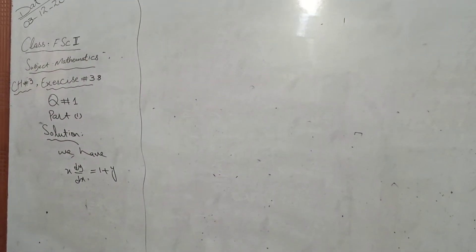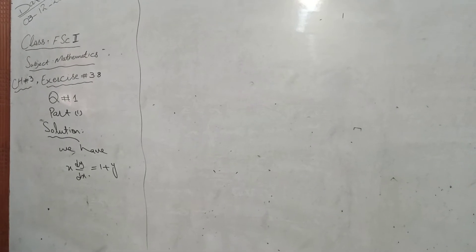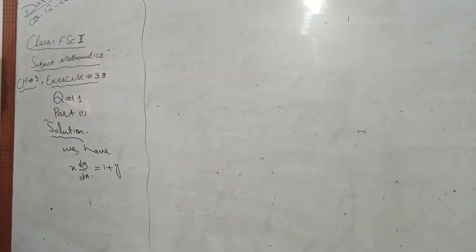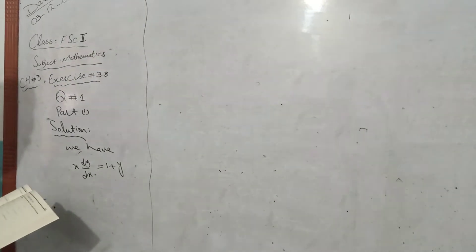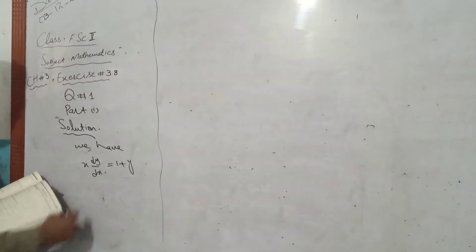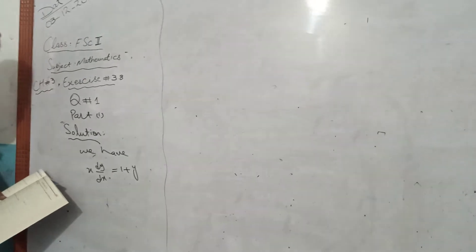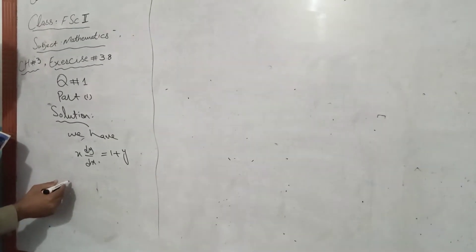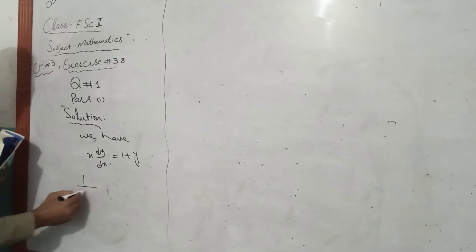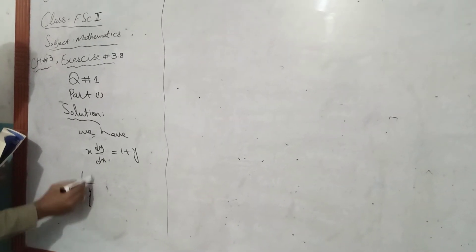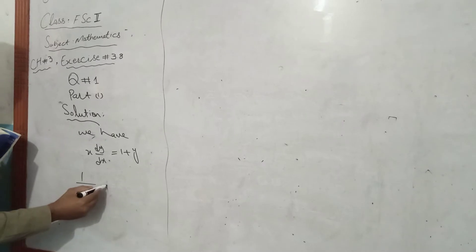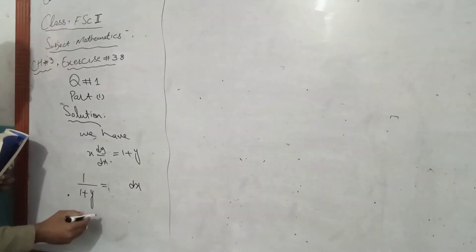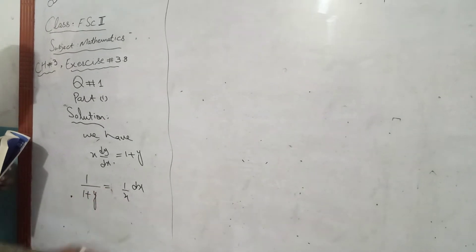If we simplify, x and dx are excited and y and dy are excited. This is 1 plus y. So, y is equal to 1 over 1 plus y equals to dx into 1 over x.